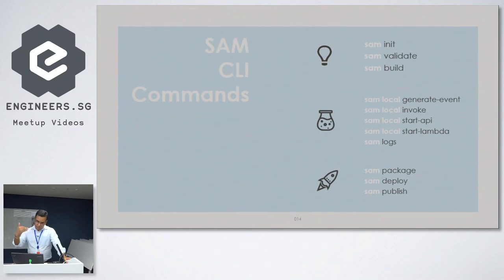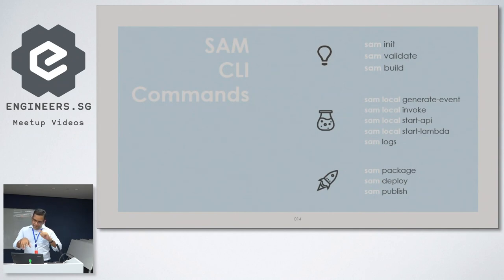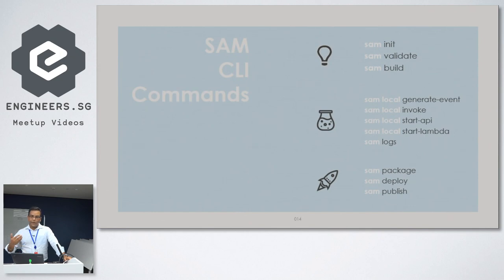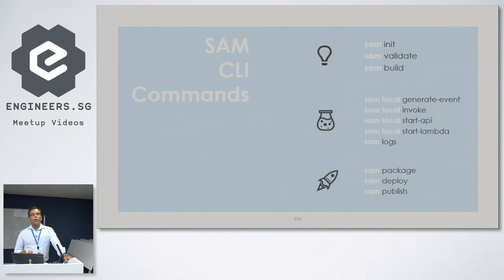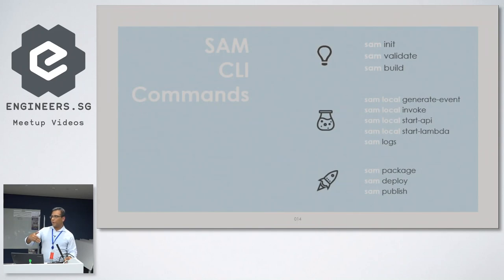That was the template part. Now the second part of SAM is the CLI commands. I've tried to divide them into different categories as and when you're developing. The three on the top - init, validate, and build - are the ones you'll use when initiating your serverless application through SAM. The second group of commands comes in handy when you're testing your serverless application, especially locally. A bit of history: when this framework was started, it was started as SAM local - the main goal was to help you test serverless applications locally without pushing to cloud. Finally, package and deploy are the ones used to deploy the application from your local machine to cloud.